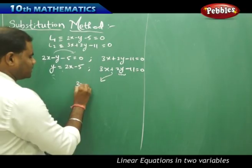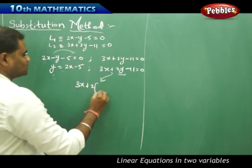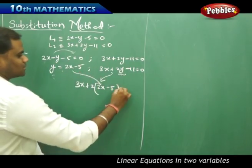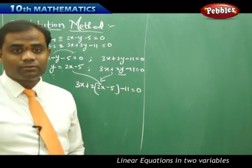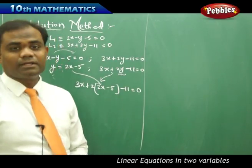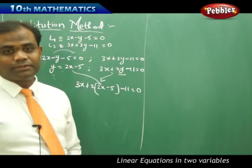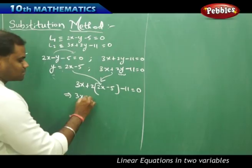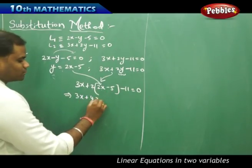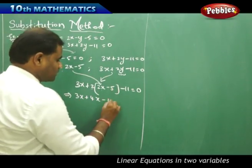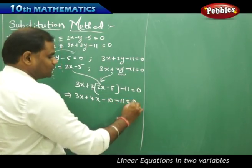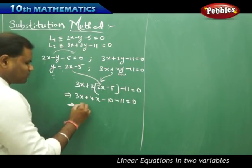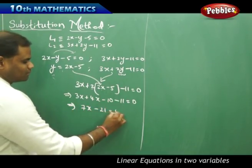When I take y as 2x minus 5 and substitute it into L2 — which is 3x plus 2y minus 11 equal to 0 — I get 3x plus 2 times (2x minus 5) minus 11 equals 0. On simplification, this gives 3x plus 4x minus 10 minus 11 equals 0, which reduces to 7x minus 21 equals 0.